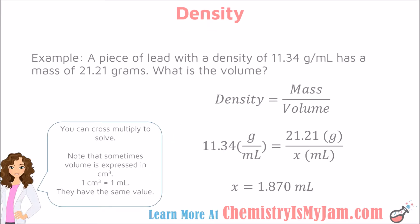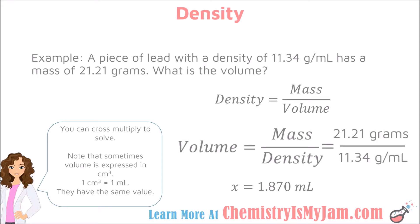Here is an example. A piece of lead with a density of 11.34 grams per milliliter has a mass of 21.21 grams. What is the volume of the sample? Beginning with the density formula — density is equal to mass divided by volume — you plug in your numbers: 11.34 grams per milliliter equals 21.21 grams divided by x milliliters. Rearranging, volume equals mass over density: 21.21 grams divided by 11.34 grams per milliliter, giving a final answer of 1.870 milliliters.